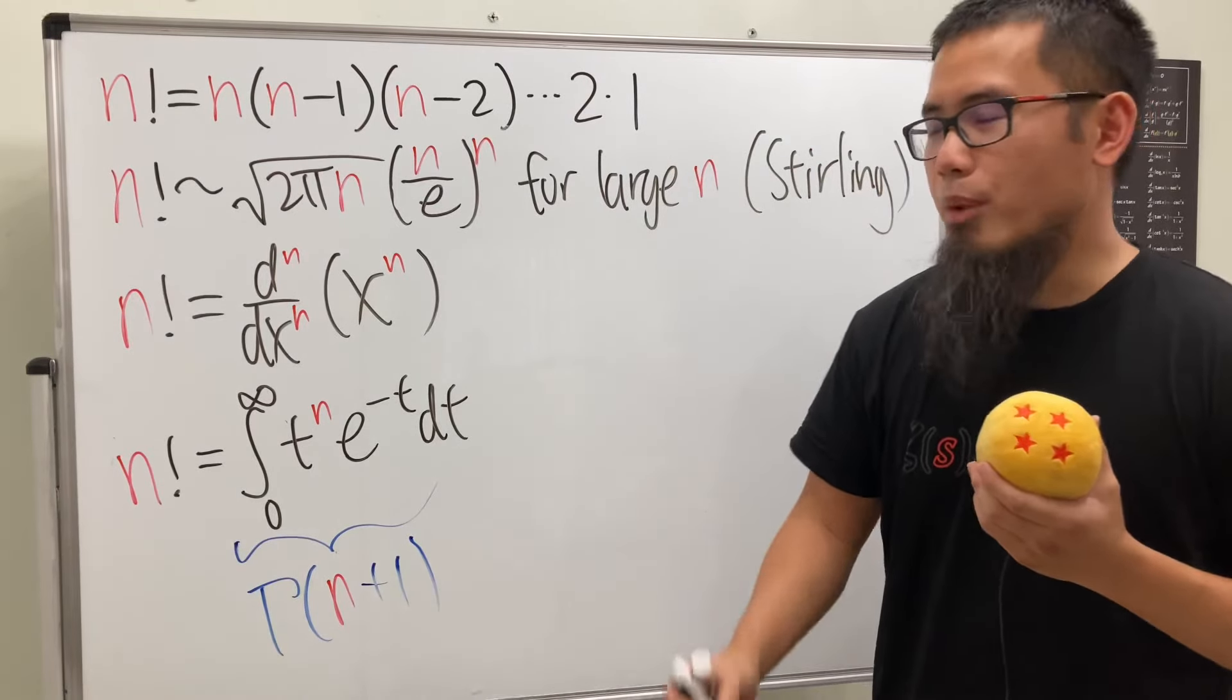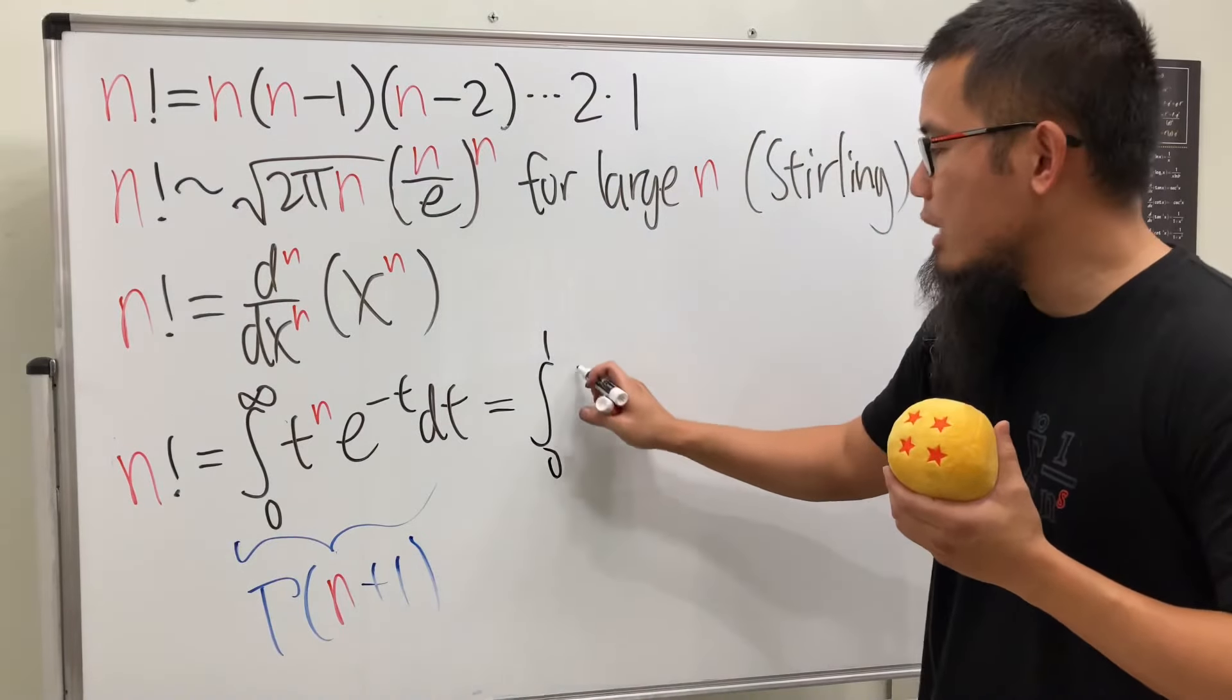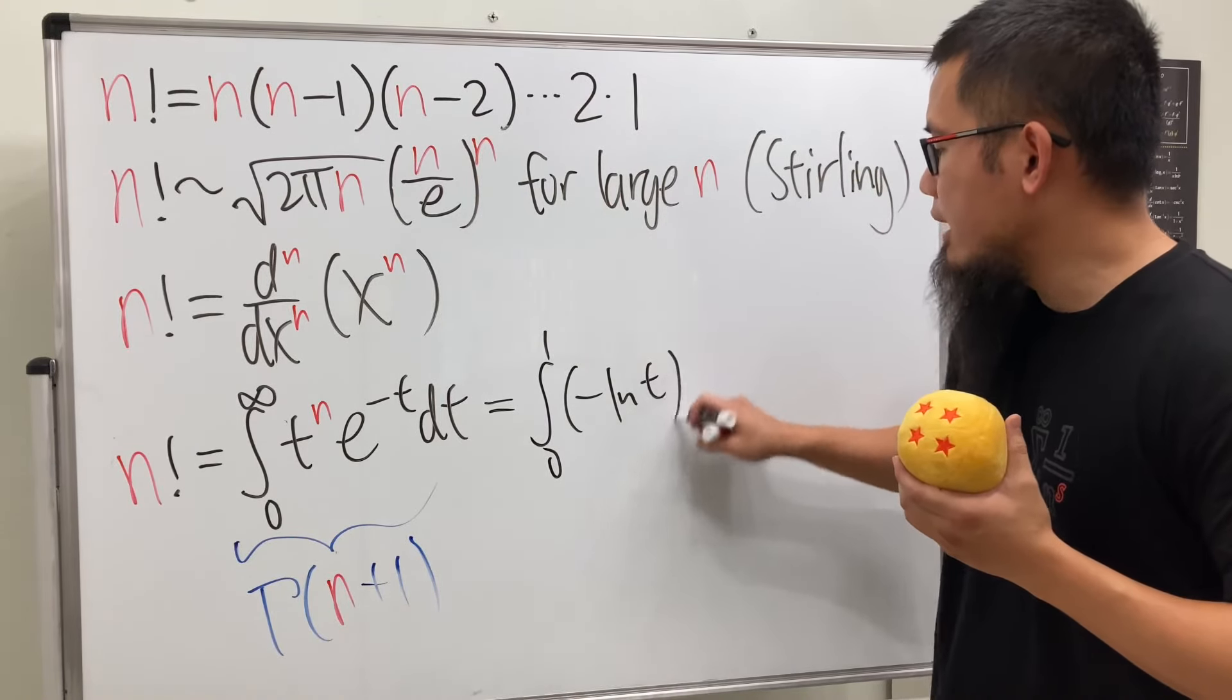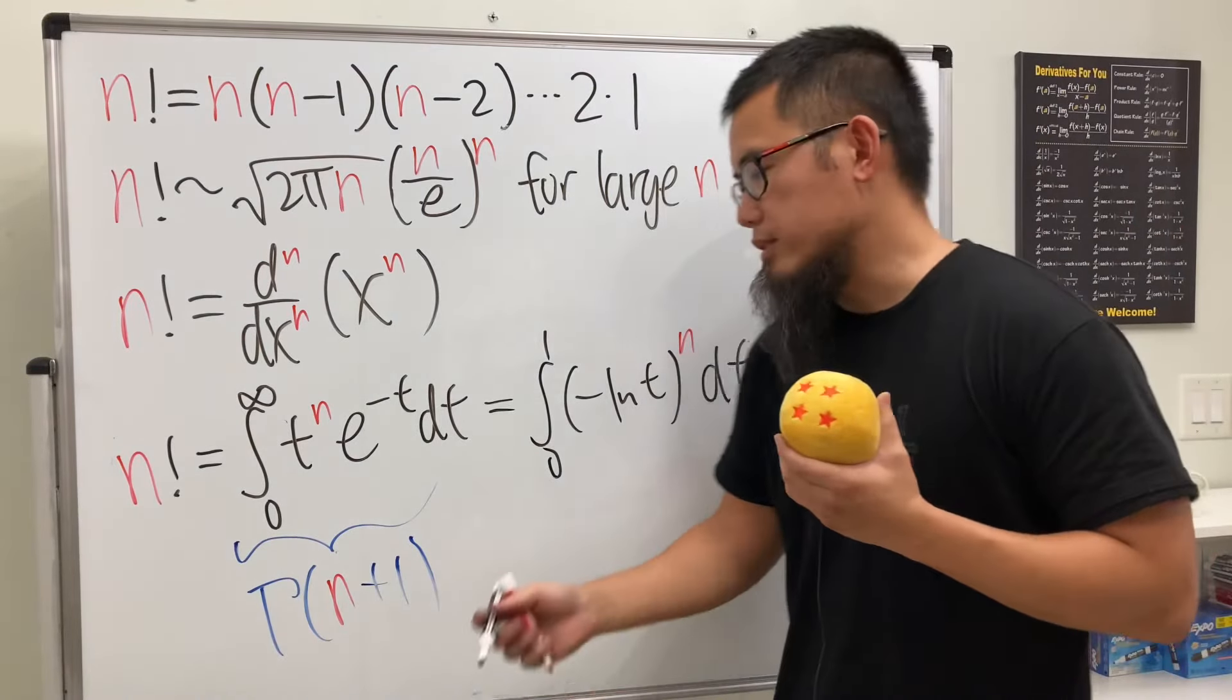Okay, and of course, this is just a small bonus, because this integral is equivalent to the integral going from 0 to 1, and then inside here we have negative ln t and raised to the n's power here, dt. You can verify this on your own by doing some u substitution.